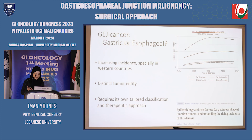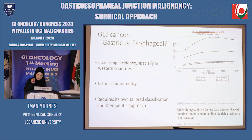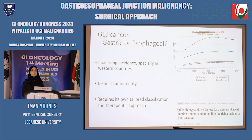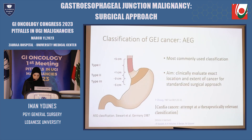Gastroesophageal junction cancer is a solid tumor entity that's been rapidly increasing in incidence during recent decades. It is anatomically associated with both esophageal cancer and gastric cancer, but its increasing incidence means that it must be recognized as a distinct tumor entity with its own risk factors and its own genetic configuration. This anatomically challenging malignancy requires its proper classification in order to assess the most effective surgical treatment.